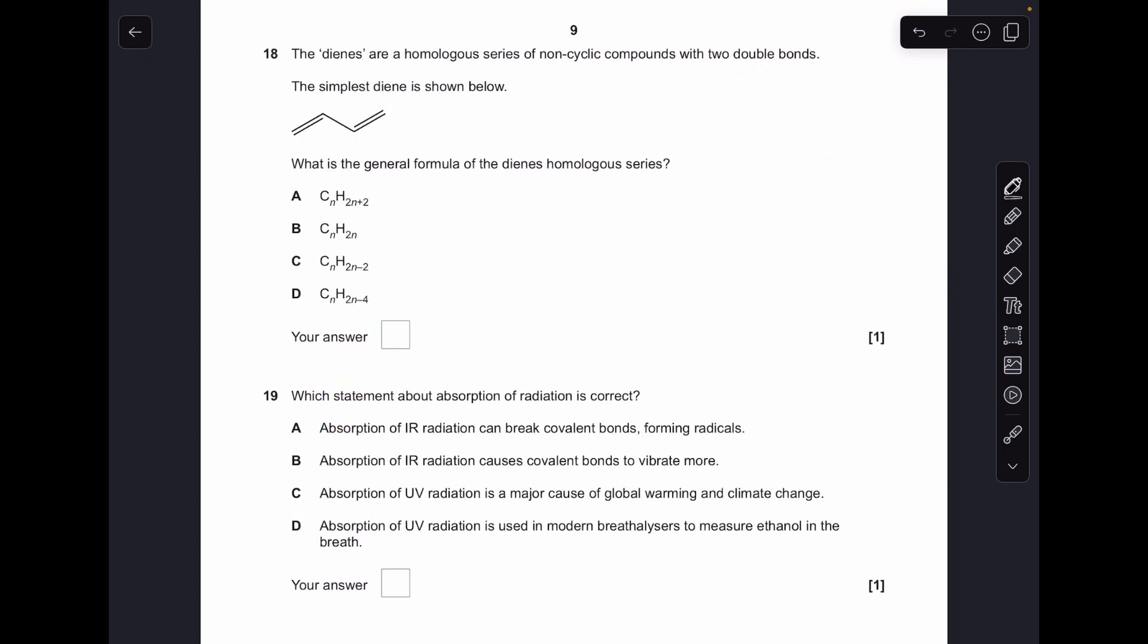Number eighteen: the simplest alkenes, ones with one carbon-carbon double bond, CnH2n. This is a diene, so it's got two carbon-carbon double bonds, so we need to knock two more hydrogens out, so it goes to CnH2n-2. So that is option C.